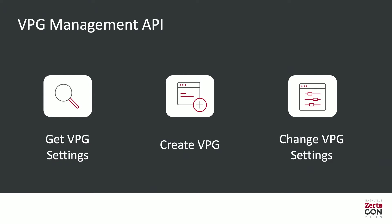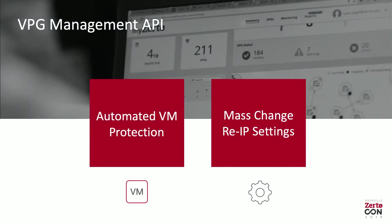With the VPG Management API you can do automated VM protection — there are a few scripts available, and we're also looking at ServiceNow integration because that keeps coming up more and more. You can also do mass changes to VIP settings — if people need to change IP addresses, change subnets, or switch from one data center to another, this lets you simply change them all in one click.